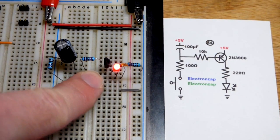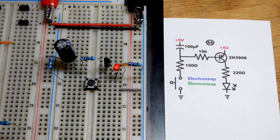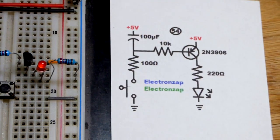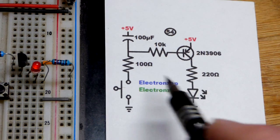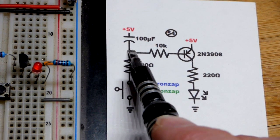In this video we're going to use a PNP bipolar junction transistor where a quick press of the switch turns the LED on. When you release the switch, the LED stays on for a while and then fades off. We're using the 2N3906, and for the timing and some other properties, we have a 100 microfarad capacitor.